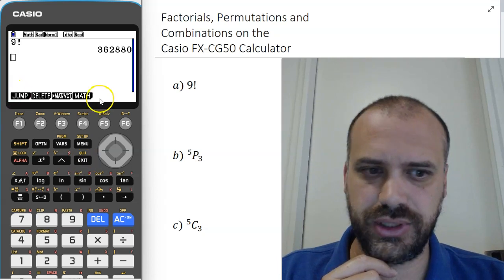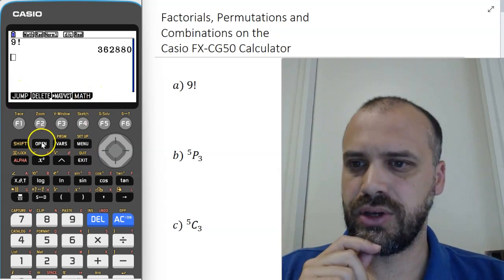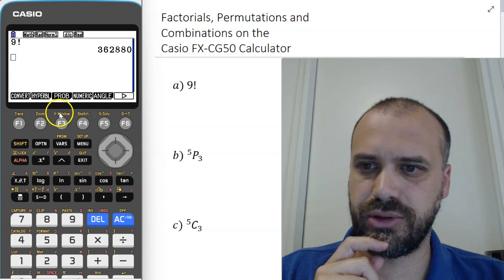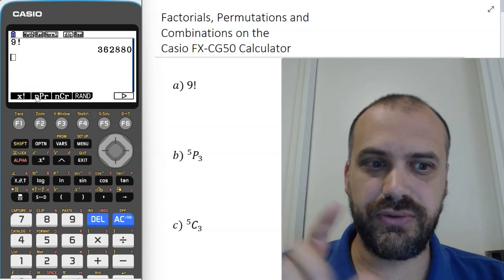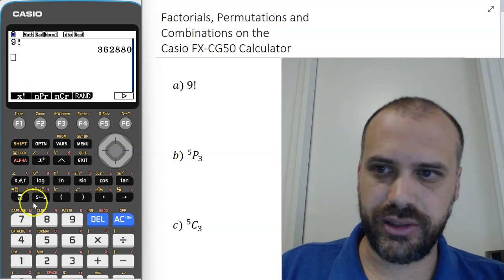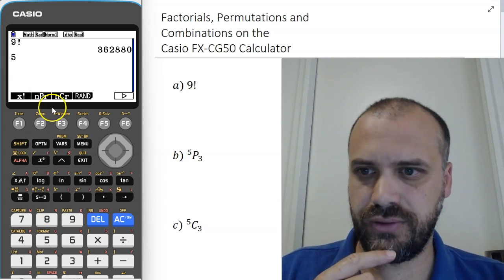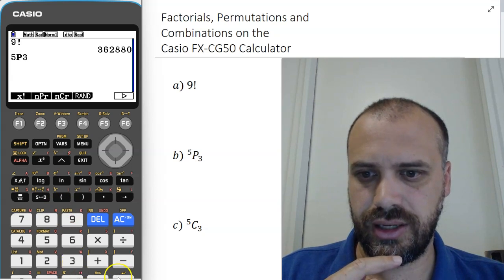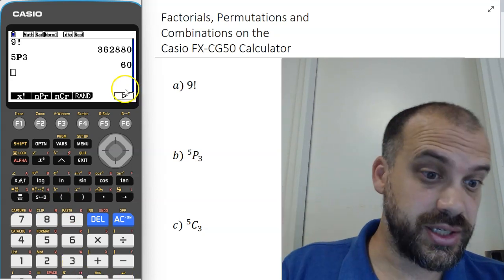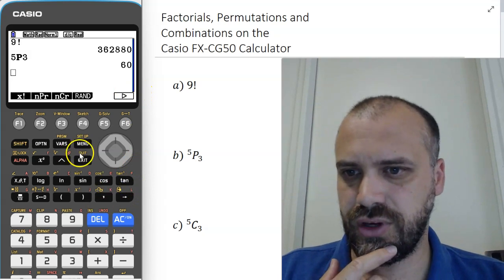to exit out so you can see what it looks like. That's what your screen looks like at the start. Option, arrow across to probability, and we want nPr. Now you've got to do it in the right order: 5P then 3, then execute. That's 60, our second answer. And then finally, I'm just going